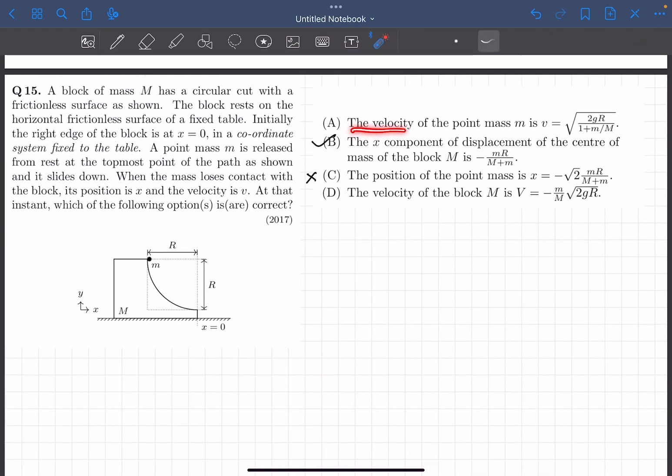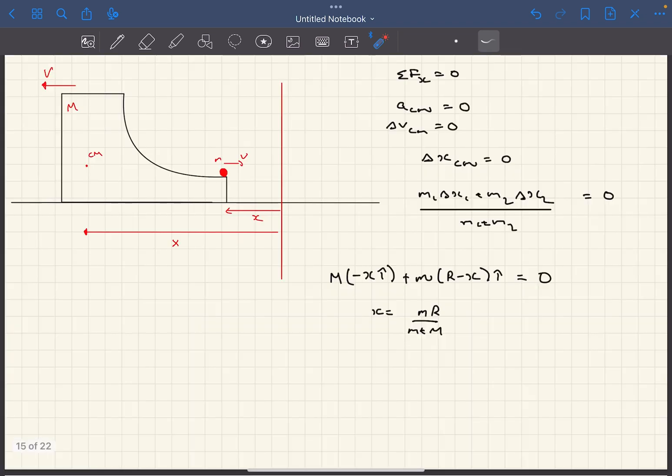Now we have to find the velocities of the masses. Now as sigma fx is 0, we can say that the system's momentum in the x direction is conserved. So initially both the blocks were at rest which means the initial momentum is 0.